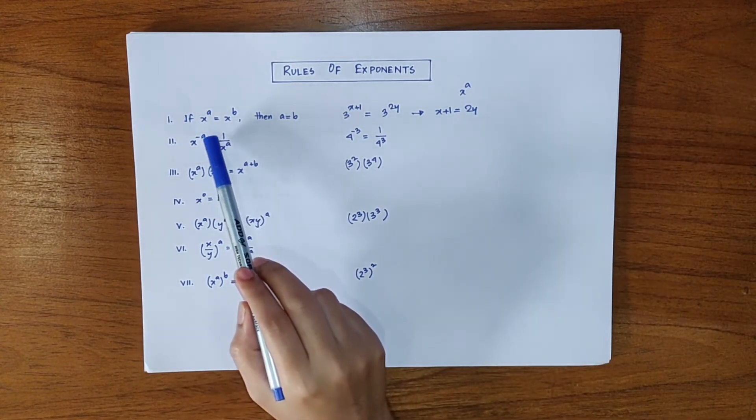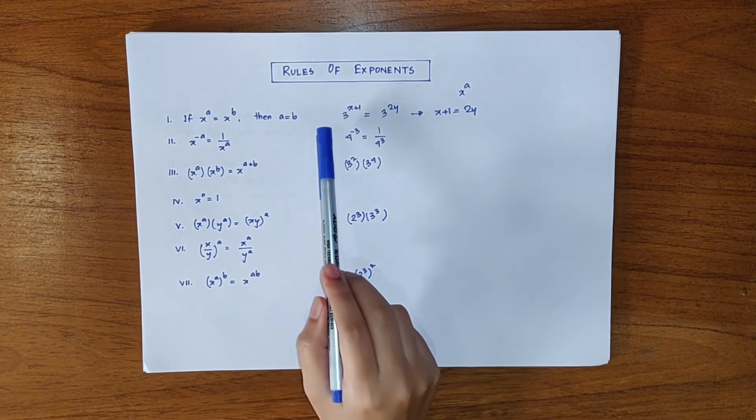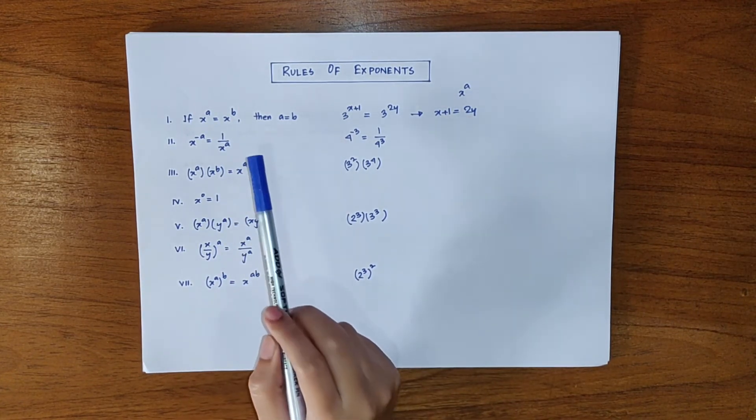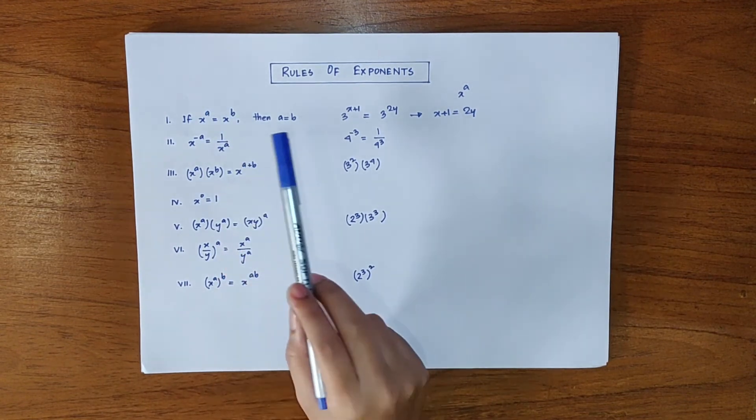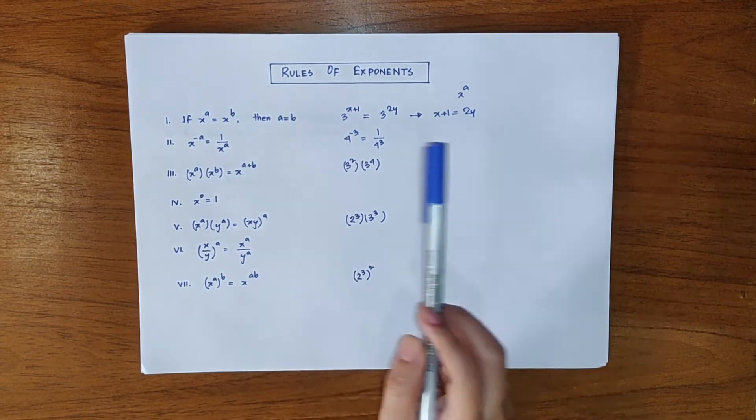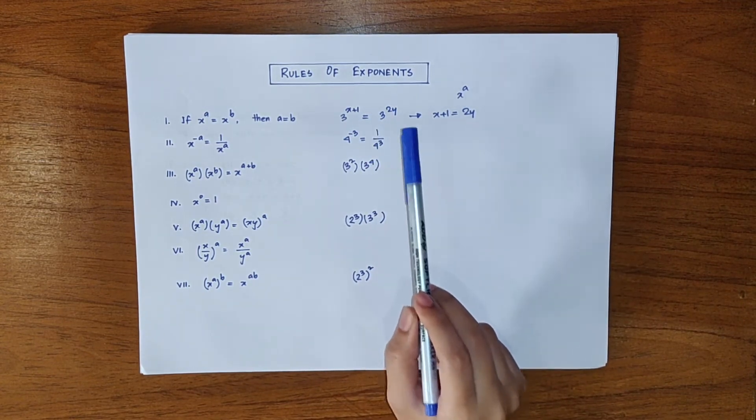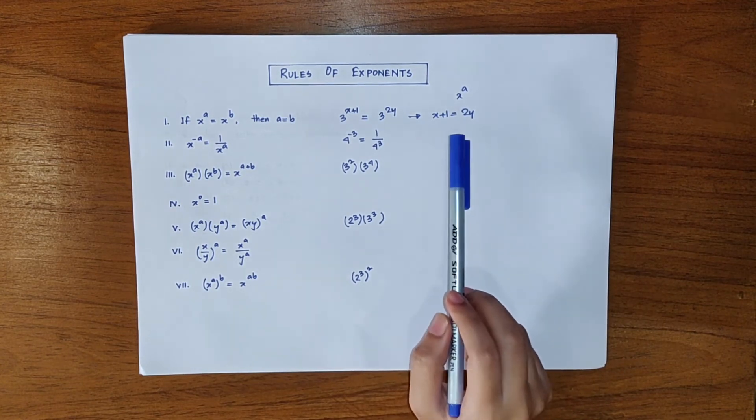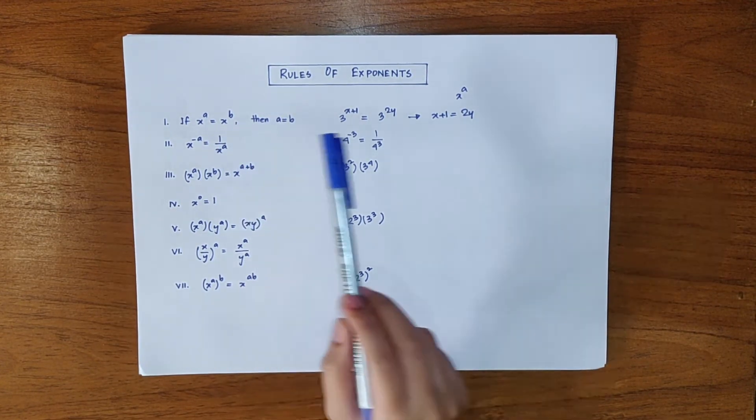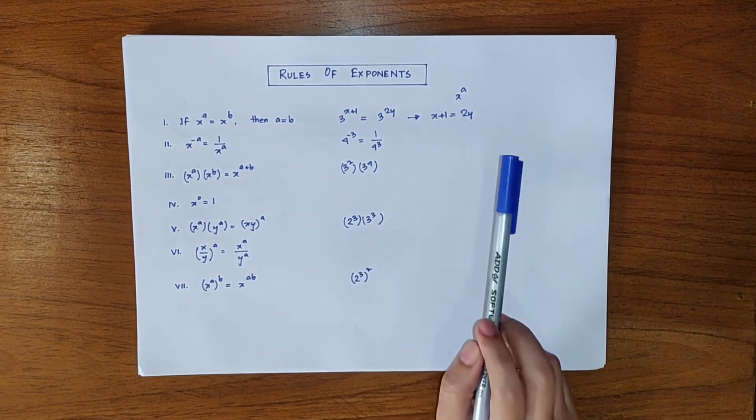If x to the power a is equal to x to the power b then a is equal to b, which means that if we have two equal values with the same base and different powers then the powers will be equal. Let's say we have 3 to the power x plus 1 equal to 3 to the power 2y. Now according to this formula we can write x plus 1 is equal to 2y.